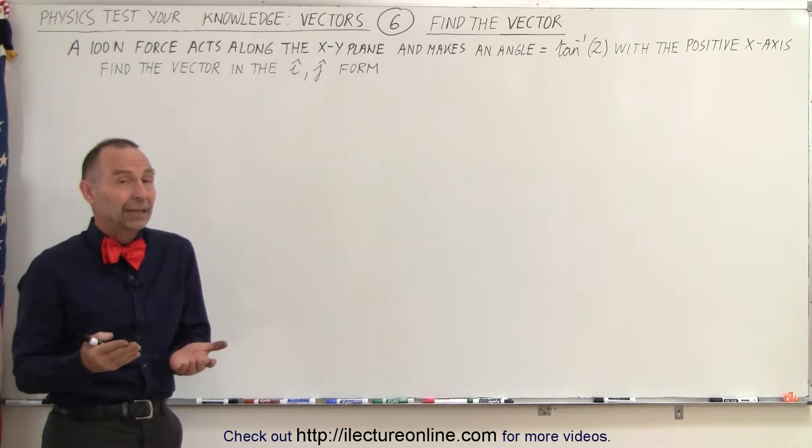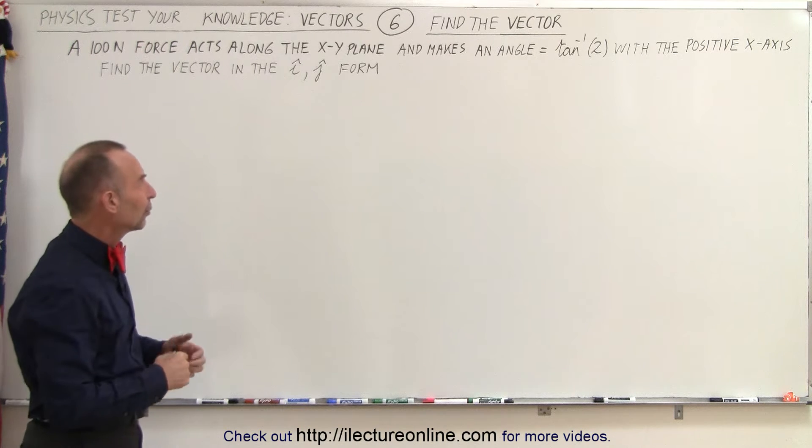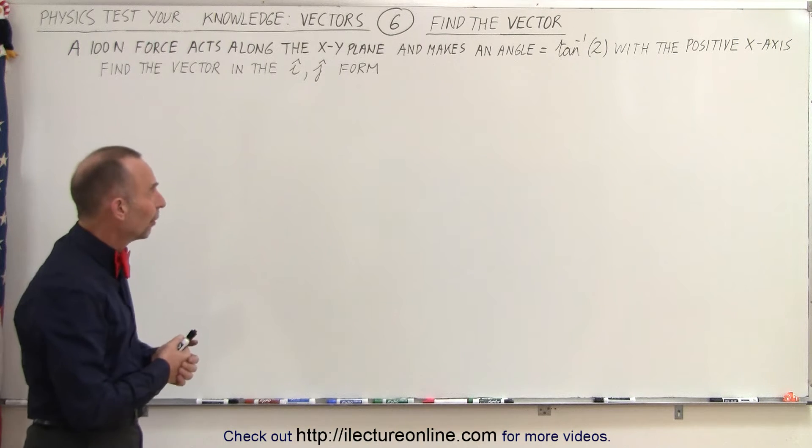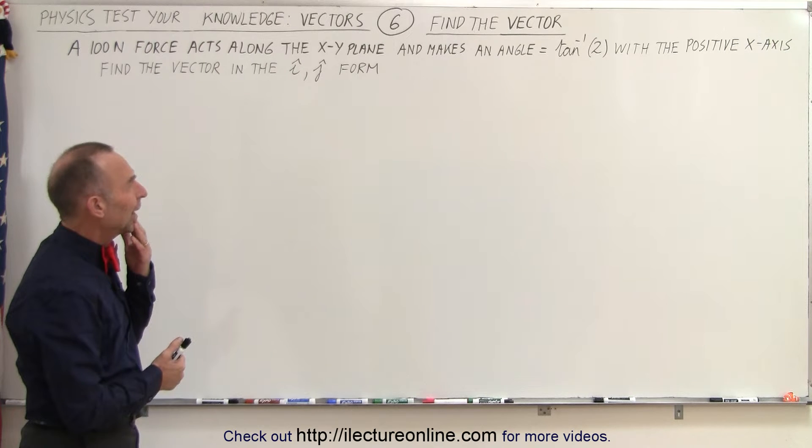Now since in the XY plane it's not going to have a third component, not going to have a K component, so it will be just in the IJ form. How do we do that?